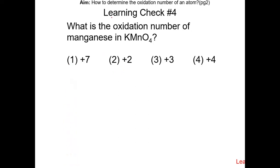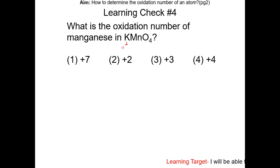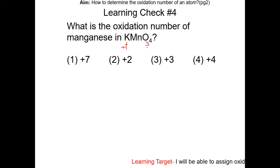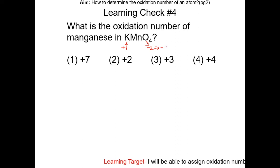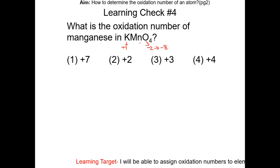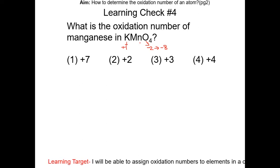Learning check number four: what is the oxidation number of manganese in KMnO4? K has an oxidation number of +1 (group one). Oxygen has an oxidation number of −2, and with four oxygens the total is −8. Therefore, manganese must be +7 in order for the sum to equal zero. The answer is choice one.